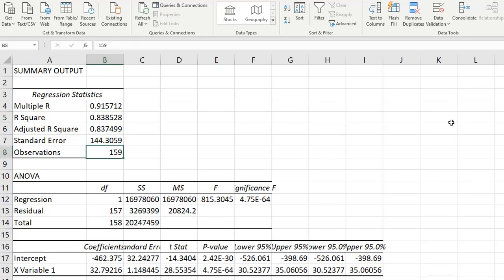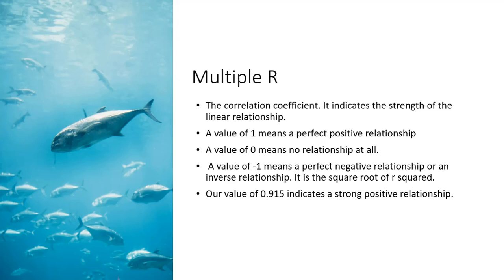And our number of observations. The multiple R is the correlation coefficient and it indicates the strength of the linear relationship. If the correlation is a perfect 1 that means it's a perfect positive relationship. A value of 0 means there is no relationship at all and a value of negative 1 means a perfect negative relationship or an inverse relationship. It is the square root of R squared. R value of 0.915 indicates a very strong positive relationship.